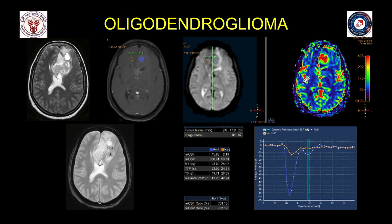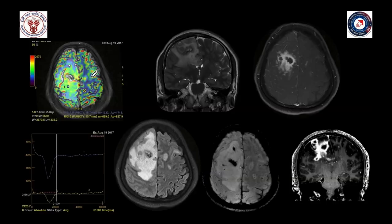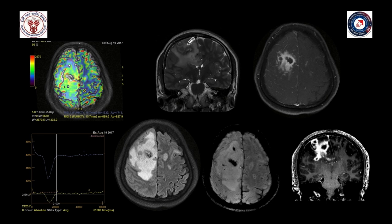Another pitfall: certain low-grade tumors like grade 2 oligodendroglioma tend to show very high perfusion values because of their characteristic 'chicken-wire' capillary architecture. Perfusion should always be used as an adjunct to conventional imaging. In this patient, the tumor involves the left frontal lobe and cortex with cortical thickening — typical of oligodendroglioma. Another unforgettable case: a frontal lobe mass with elevated rCBV of approximately 2, heterogeneous T2 signal, heterogeneous enhancement, peripheral enhancement with central necrosis, and susceptibility suggesting hemorrhage in a possible high-grade tumor.